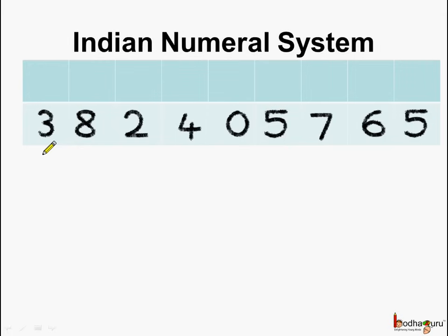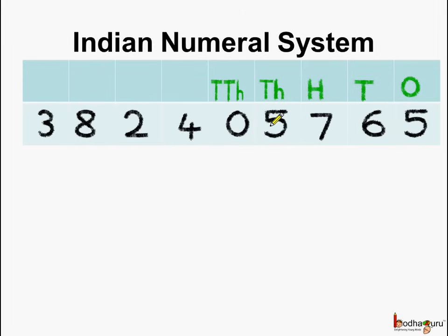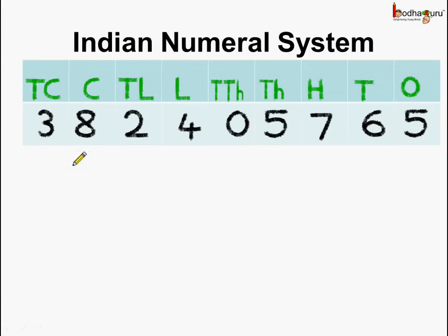So let us try to read this big number using the Indian numeral system. First let us place it under the place value chart. Starting from the rightmost digit we know it is the ones place, then comes the tens place, then hundreds, then thousands, then ten thousands, then lakhs, followed by ten lakhs, then crore and then ten crores. It becomes very easy to read any large number if we place it under the place value chart.